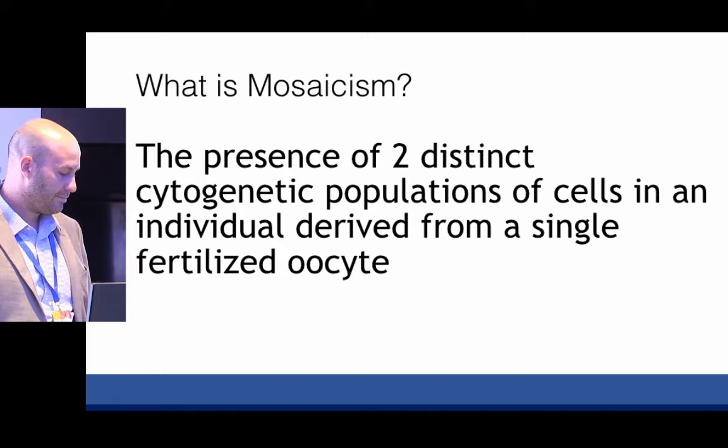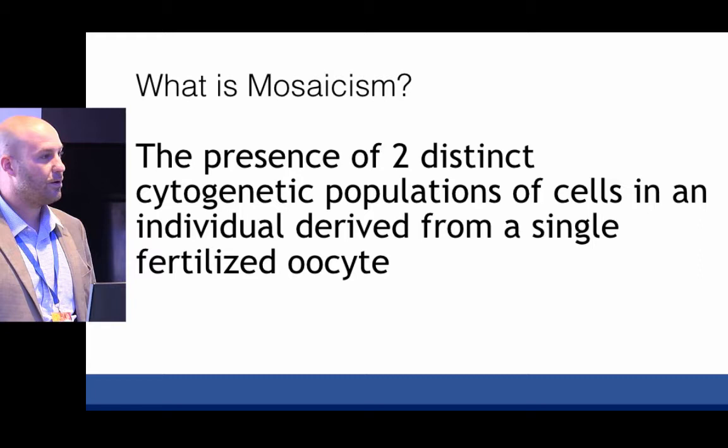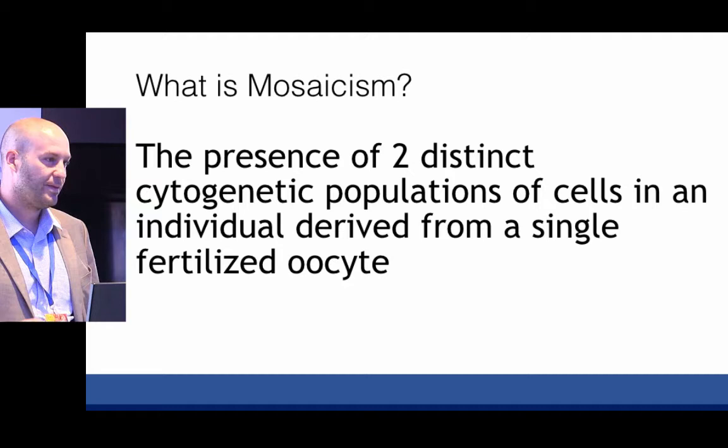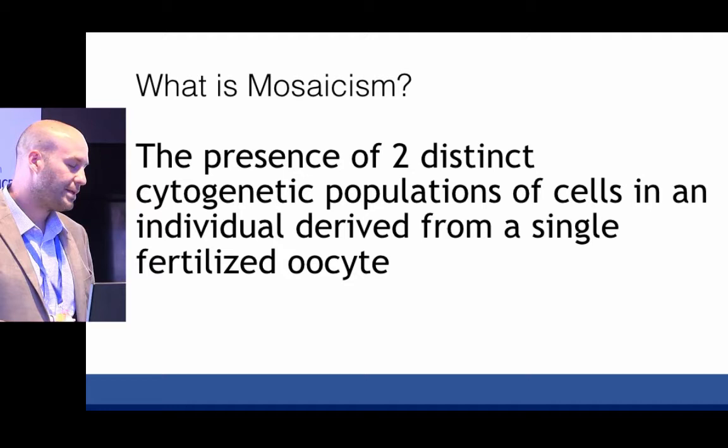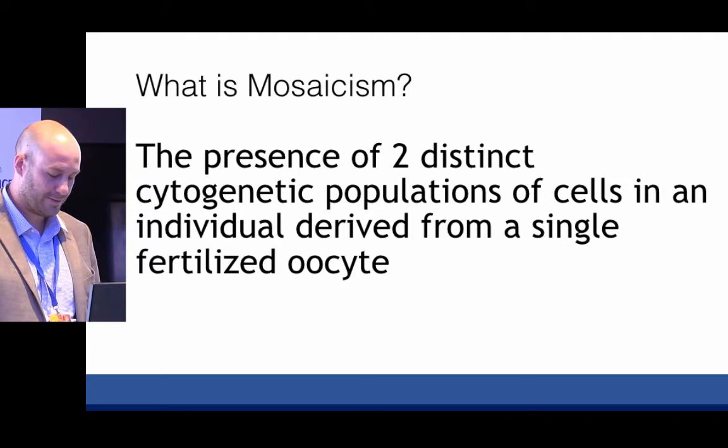So first, a very basic definition of mosaicism: the presence of two distinct cytogenetic cell populations of cells in an individual derived from a single fertilized oocyte. As you have seen in the earlier talk, you have two populations of cells. You might have one normal population and a monosomic population, or a normal population and a trisomic population. The key is you have two different cell types.